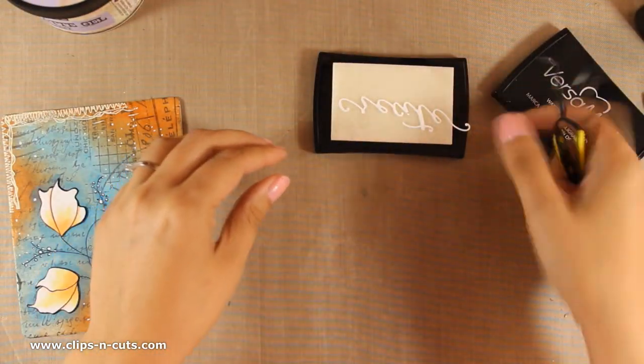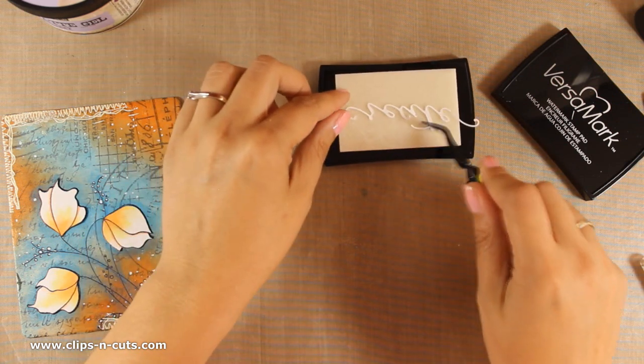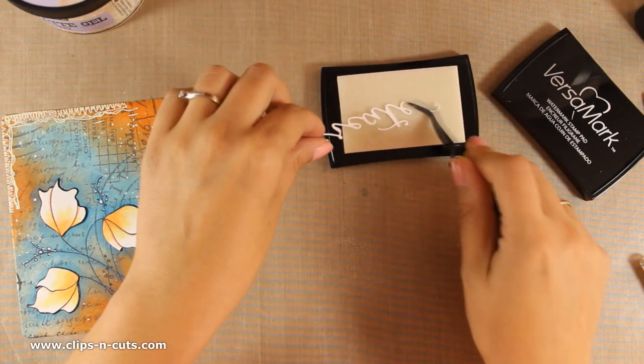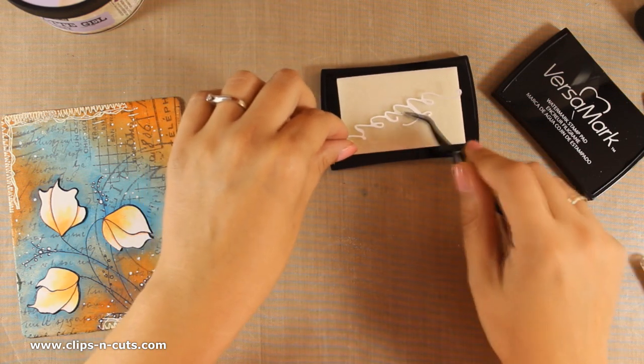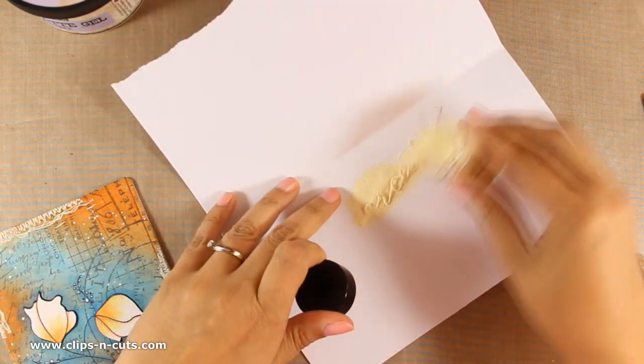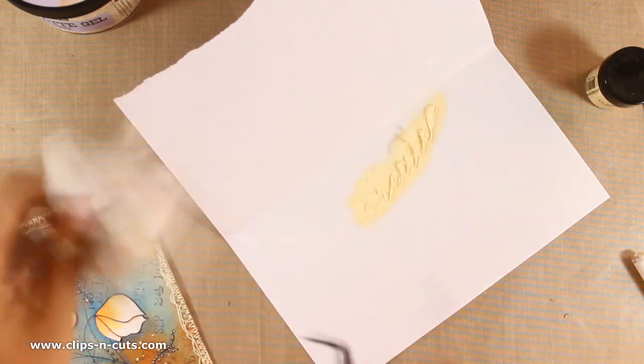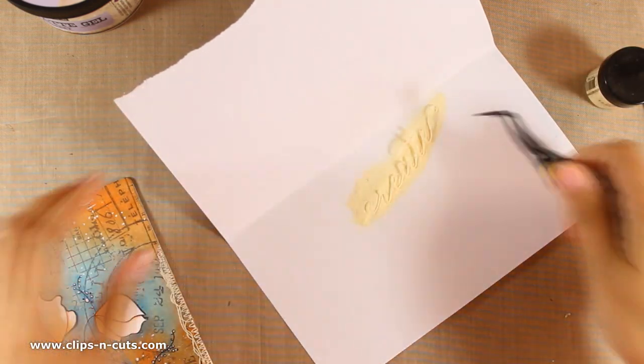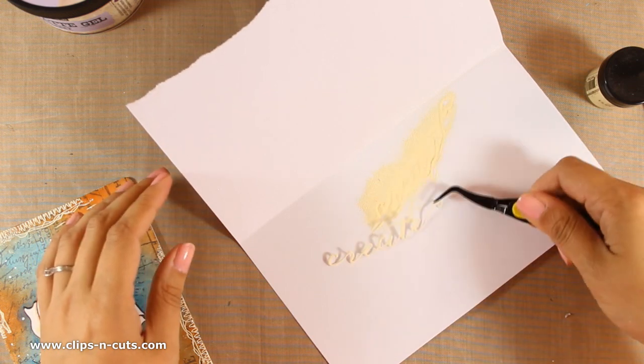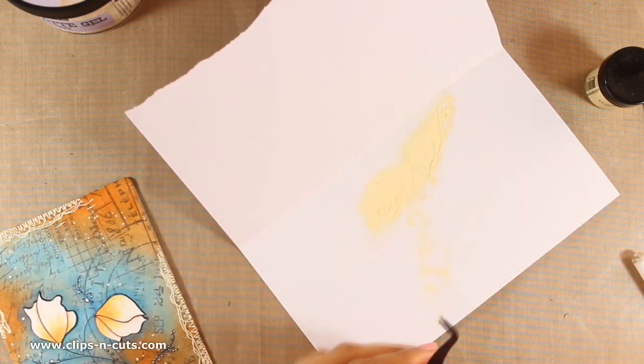I am applying my die cut over my VersaMark ink pad, making sure that it's nice and wet, and then I am going to apply the embossing powder all over my die cut. Just because my die cut is so delicate and to avoid burning my fingers as I heat set the powder, I am using my tweezers to help me out.